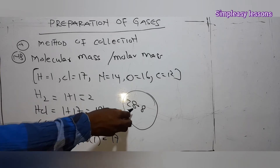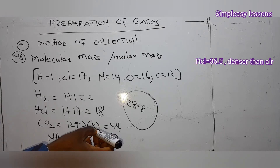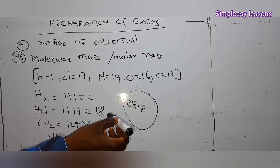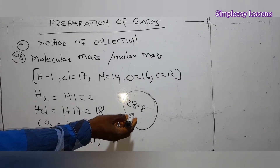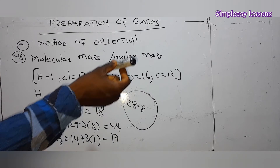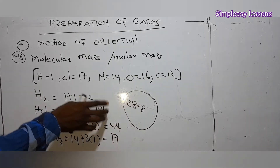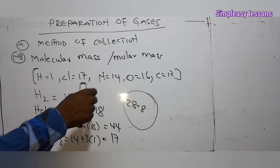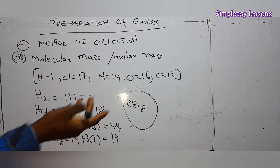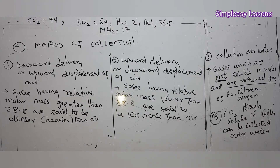For example, hydrogen gas has a molar mass of 2, which is less than 28.8, so it is less heavy than air — it floats. Just like something light placed in water will float, a gas lighter than air will rise upward. So we say that will be upward delivery. If the thing is heavy, like a stone in water, it sinks — so a heavy gas moves downward.